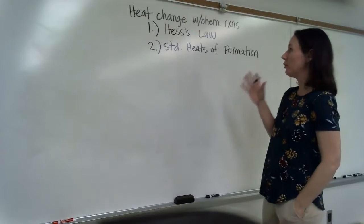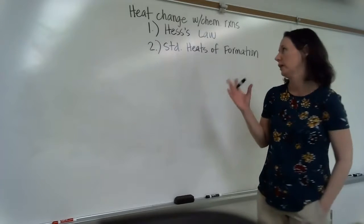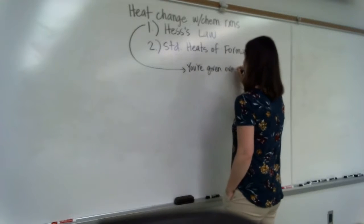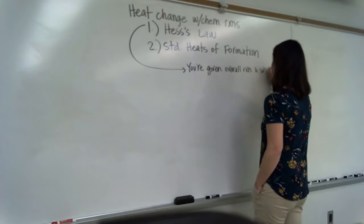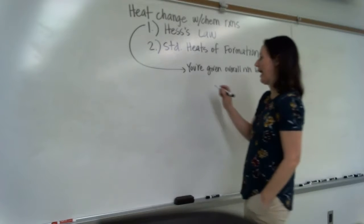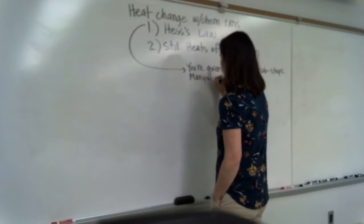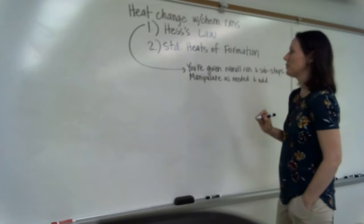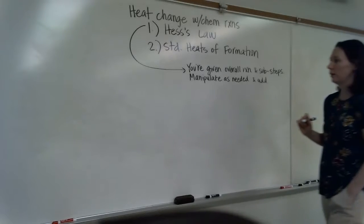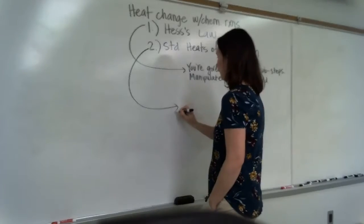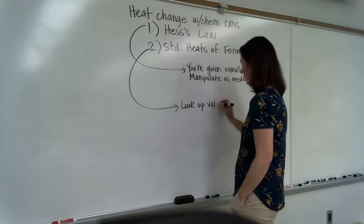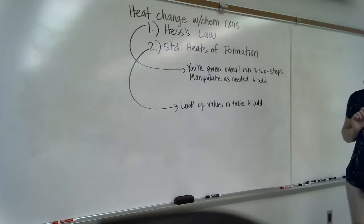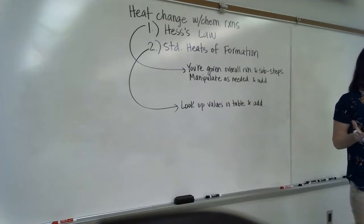Both methods will tell you how much heat is associated with a given chemical reaction. With Hess's Law, you're given an overall reaction and sub-steps, and then you manipulate and add as needed. With standard heats of formation, you look up values in a table and add. Both methods are not difficult — you just use the one based on the information you're given.